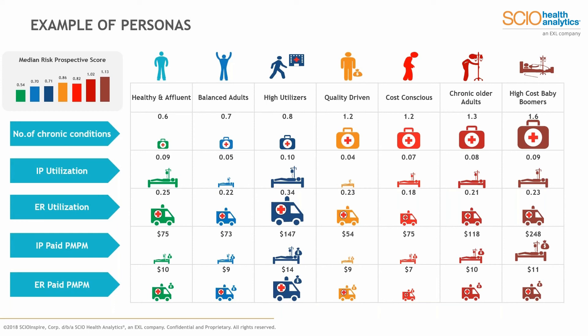Some of the metrics we're looking at, as John mentioned, include number of chronic conditions, inpatient utilization, emergency room utilization, inpatient per member per month payments, and ER per member per month payments. There are many additional metrics we calculate as well. Think of this as the back-end analysis that produces the prospective risk score John mentioned. The color of each symbol in the risk legend at the top left represents the medium risk score, and the size of the symbol represents the volume of the metric per individual cluster.